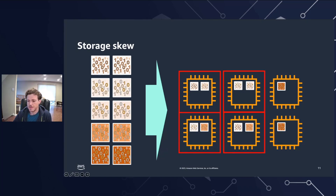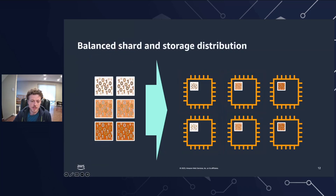For example, if you have 12 primary shards, your data node count should be 2, 3, 4, 6, or 12 — all factors of 12. However, shard count is secondary to shard size. Thus, if you have just 5 gigabytes of data, you should still use a single primary shard. Balanced distribution of shard storage across data nodes will ensure efficient resource utilization across data nodes.